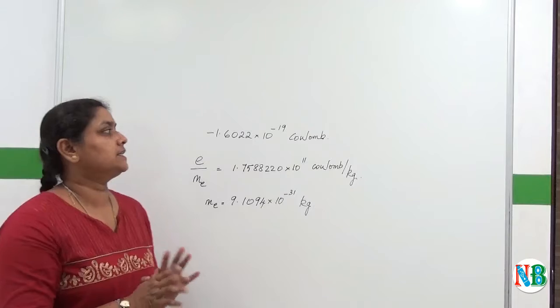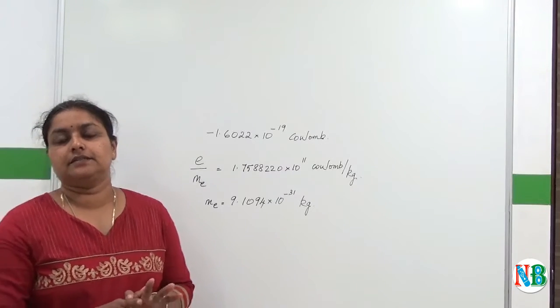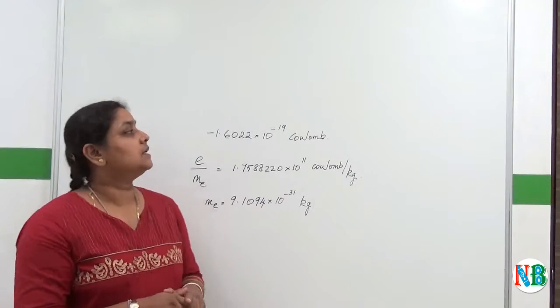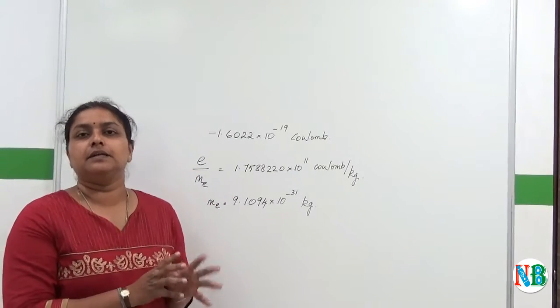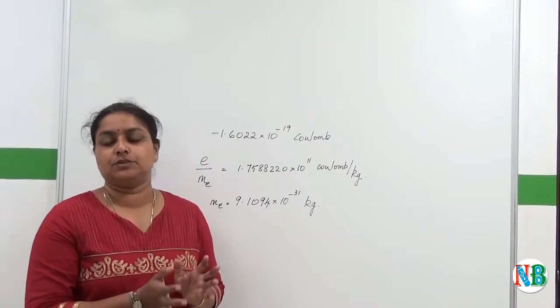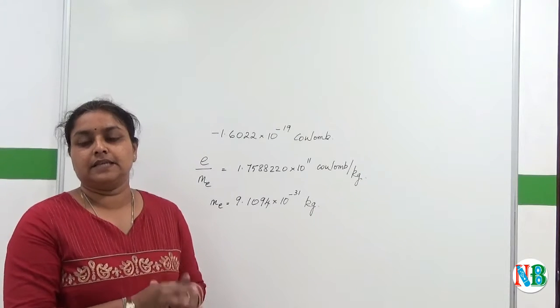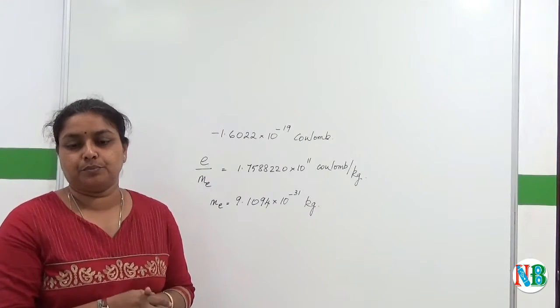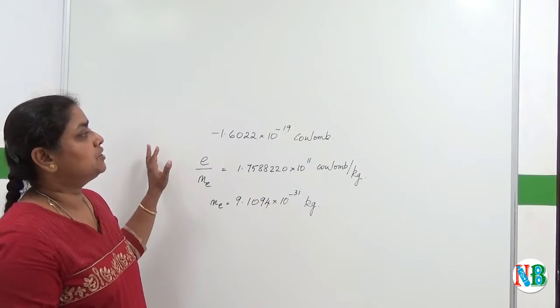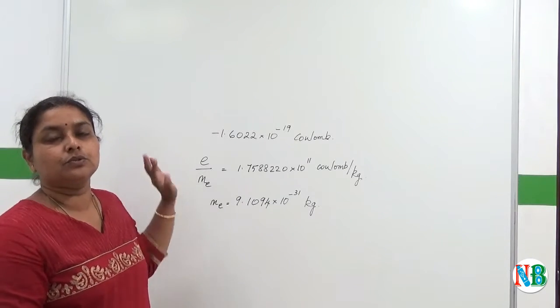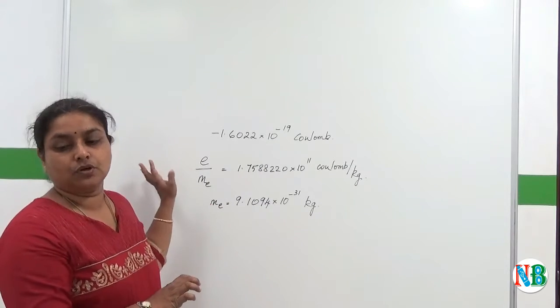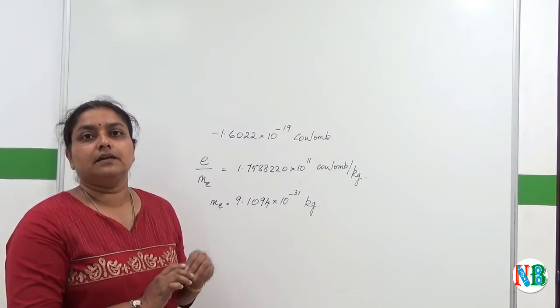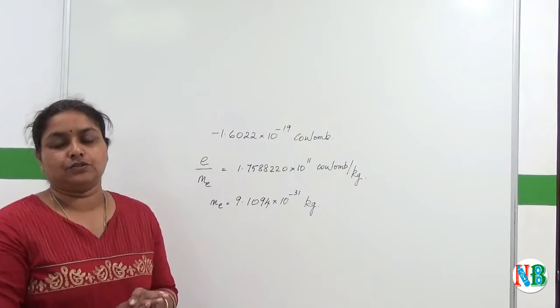From this experiment that R.A. Milliken did, he found out that the particles which are emitted depend upon the gas that is passed into the CRT, that is cathode ray tube. Also, the charge to mass ratio depends upon the gas and the number of protons are generally equal to the number of electrons.